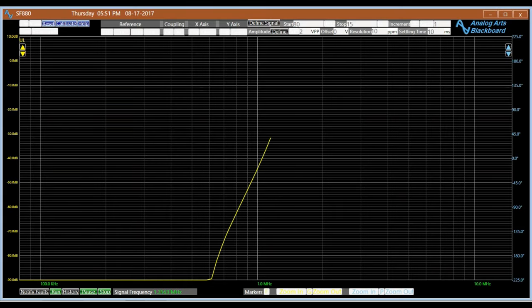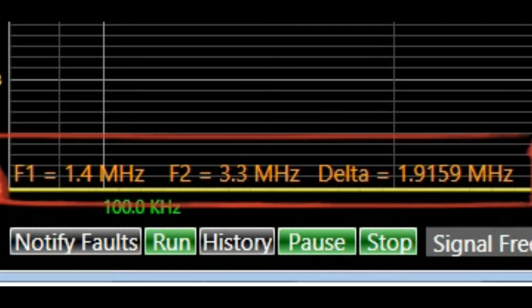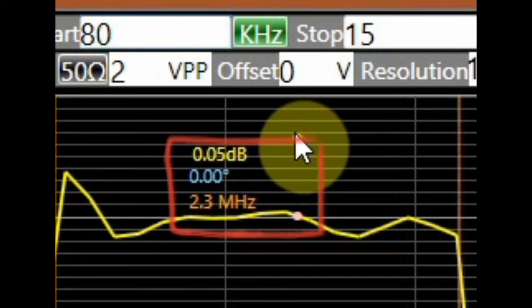For a passband filter however, the bandwidth is the difference between the two cutoff frequencies. This passband filter passes frequencies between 1.4 MHz and 3.3 MHz. Therefore, it has a bandwidth of about 1.9 MHz and a center frequency around 2.3 MHz.